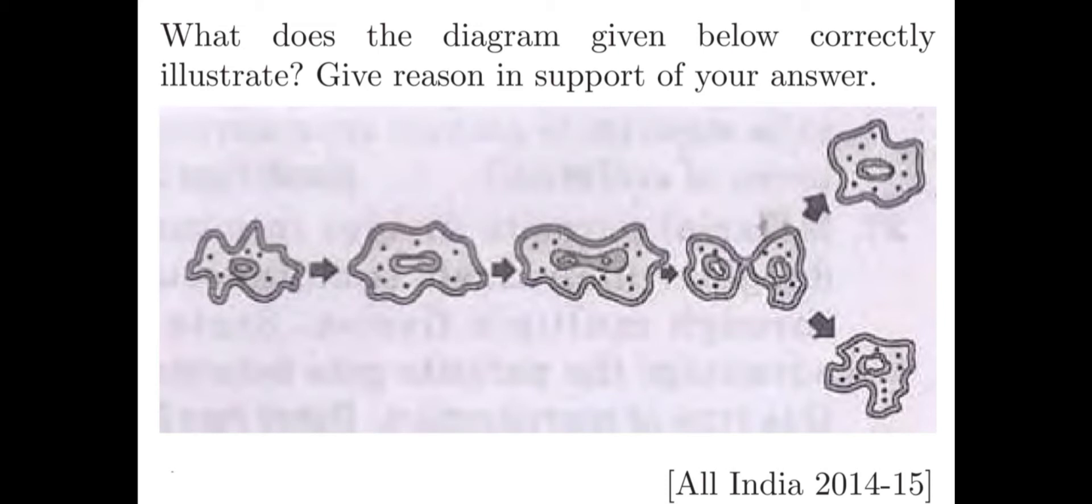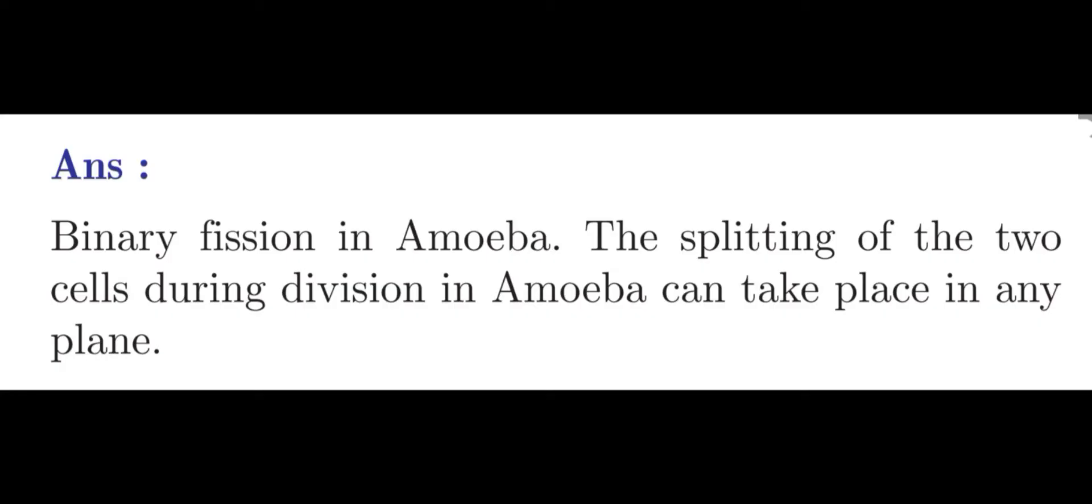Now what answer can be given to this question? The expected answer is binary fission in amoeba. The splitting of two cells during division in amoeba can take place in any plane as it does not have any particular shape. And of course you can add few more points also. One cell is dividing into two and it's a kind of asexual reproduction.